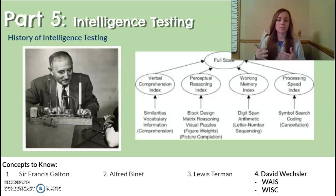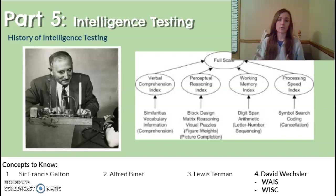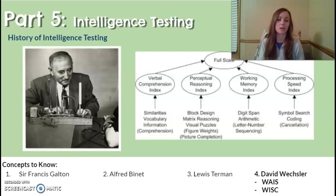The next person is David Wechsler. Wechsler developed the most widely used intelligence test today: the Wechsler Adult Intelligence Scale, or WAIS, which is the IQ test given to adults. The Stanford-Binet is still used today, but the WAIS is most widely used. He also created the WISC — the Wechsler Intelligence Scale for Children — and the WPPSI, the Wechsler Preschool and Primary School Intelligence Test, which are formatted tests appropriate for children's ages.